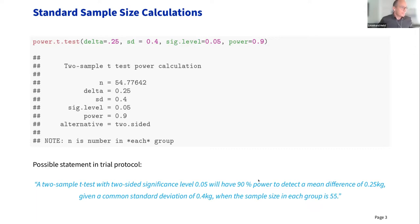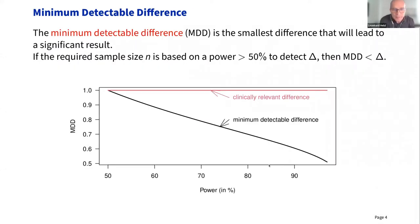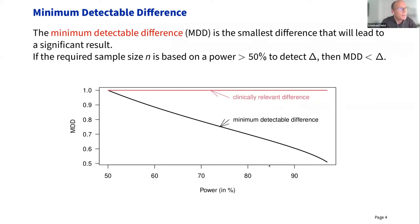There are some peculiar features about sample size calculations based on power. One particularly striking aspect relates to what's called the minimum detectable difference — that's something different from the clinically relevant difference. The minimum detectable difference is defined as the smallest difference that will lead to a significant result, and it obviously depends on the sample size.